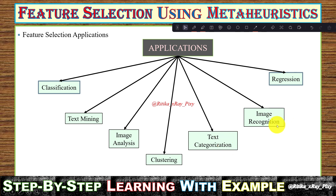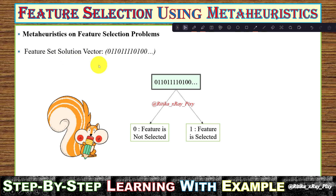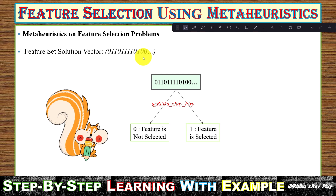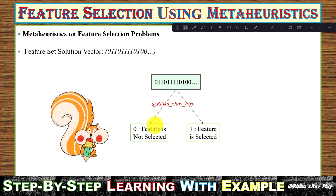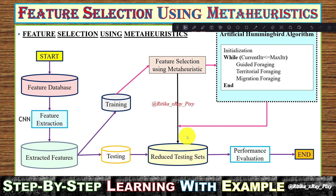Feature selection can be used for classification, text mining, image analysis, clustering, text categorization, image recognition, and regression. In meta-heuristic feature selection, a feature set solution is represented as a binary string — for example, 0, 1, 1, 0, 1, 1, 1 — where zero means the feature is not selected and one means the feature is selected.